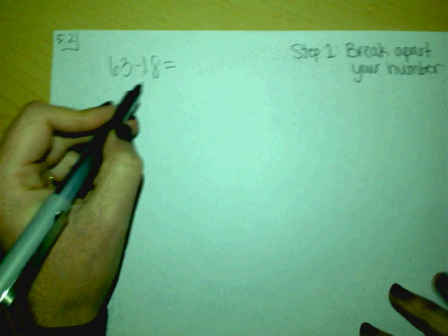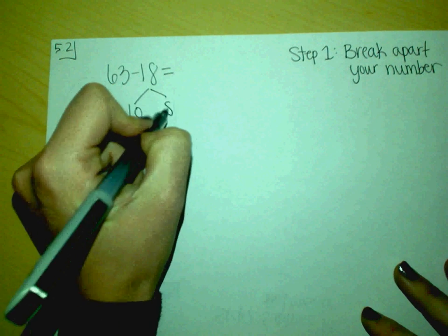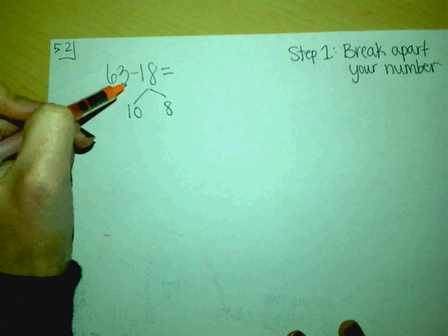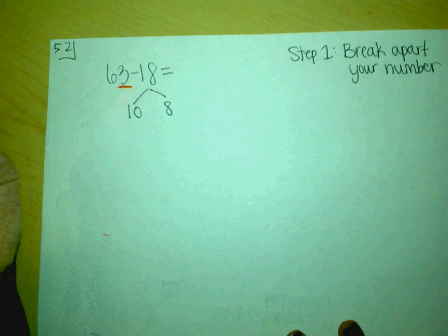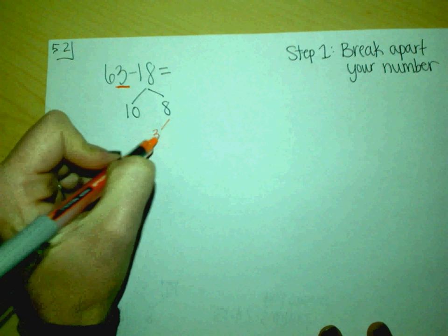Okay, so you look at 18 and you break it into tens and ones. You have ten and eight. The next thing you want to do is look at how many ones you have in your starting number.